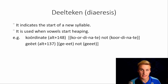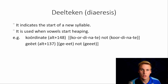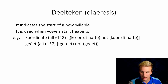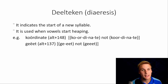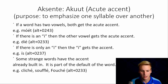Deelteken, or diaeresis, indicates the start of a new syllable and is mostly used when vowels start heaping. For example, koördinaat. You can see we break the syllables up — I've posted it on the right side in brackets: ko-ör-di-na-at. It's not koördinaat. There's a big difference. Geëet — it's not geet, it's ge-ëet. You can see where it starts the new syllable.